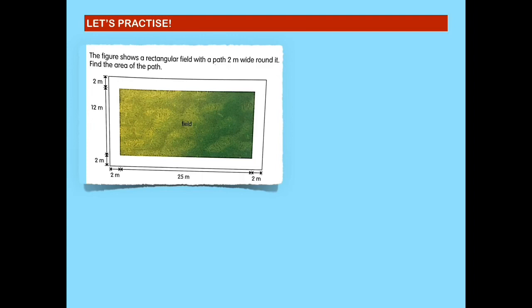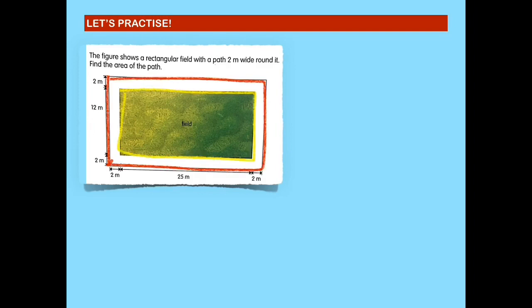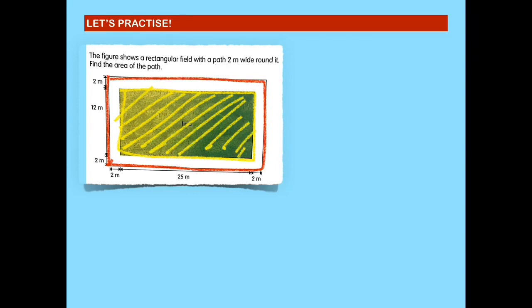Let's practice some more. The figure shows a rectangular field with a path 2 meters wide around it. Find the area of the path. Using your maths journal, I would want you to find the answer using the whole part-part strategy. We know that 2 meters is the width of the path around the rectangular field, as shown in the given figure. We need to find the area of the path. We can imagine the whole as being made up of the area of the path and the area of the rectangular field.